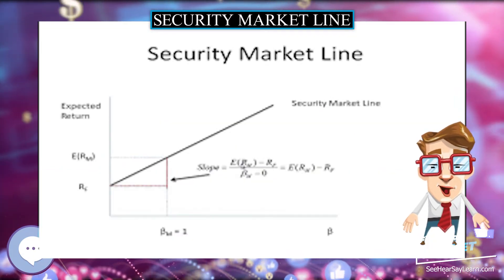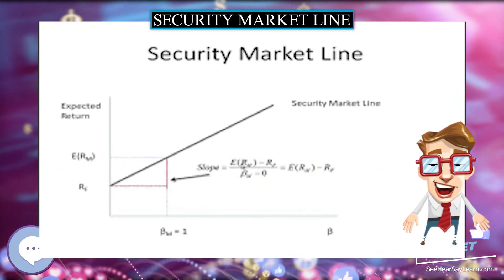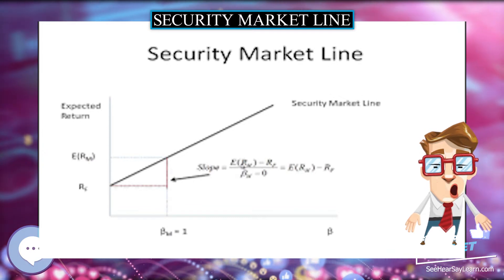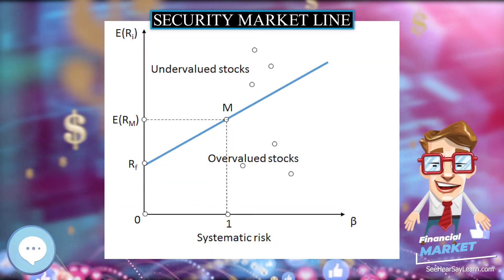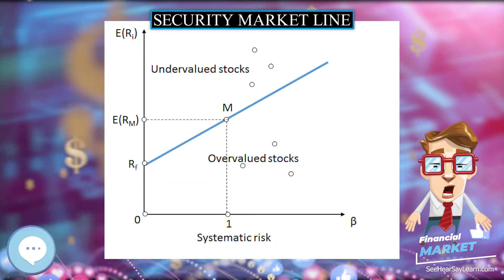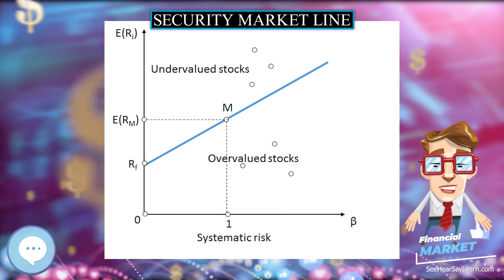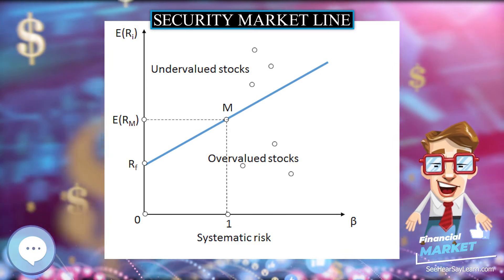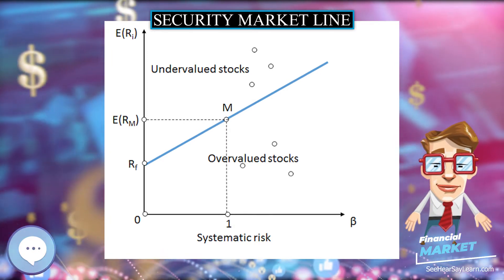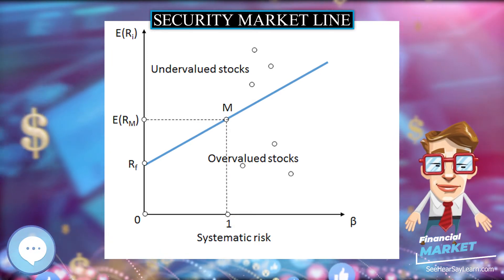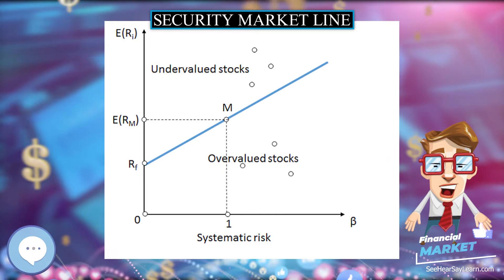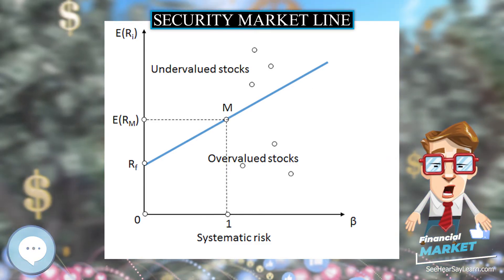The assets above the line are undervalued because for a given amount of risk (beta), they yield a higher return. The assets below the line are overvalued because for a given amount of risk, they yield a lower return.